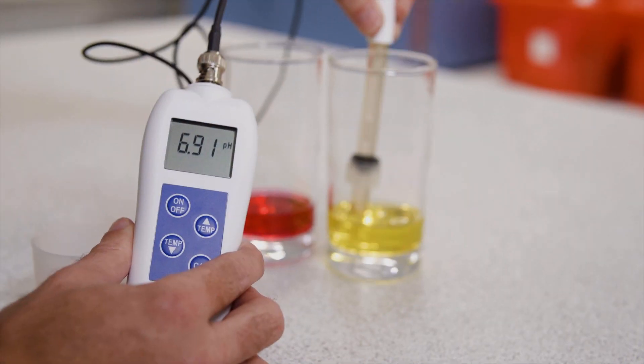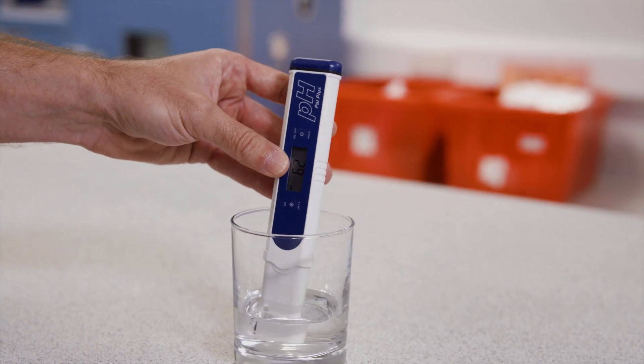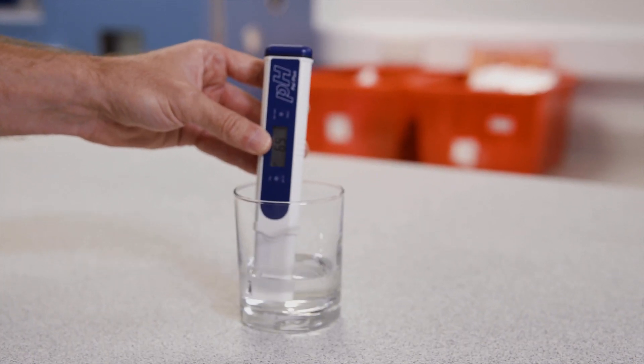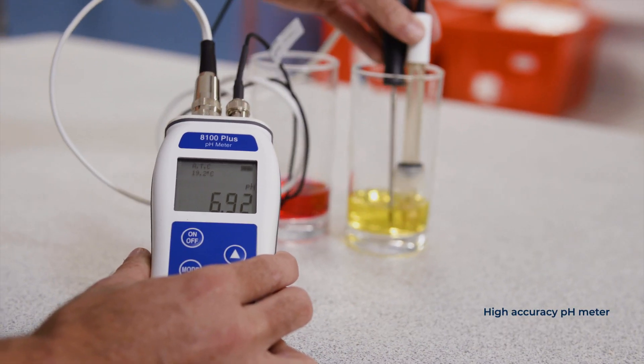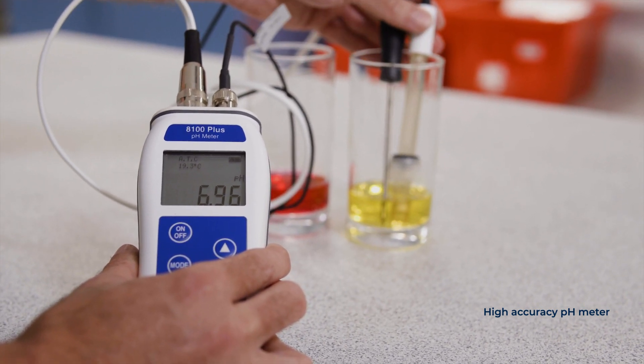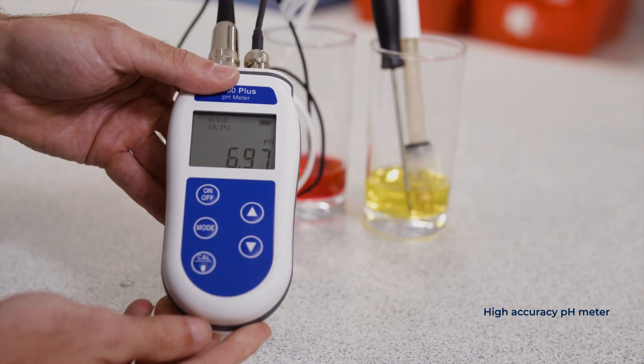Finally, just like with thermometers, you can select a pH meter with a higher accuracy. Budget testers, like the pH-PAL, have an accuracy of around plus or minus 0.2 pH, whereas the ETI 8100 plus pH meter has an accuracy of plus or minus 0.02 pH, which is ideal for applications where high accuracy is paramount.